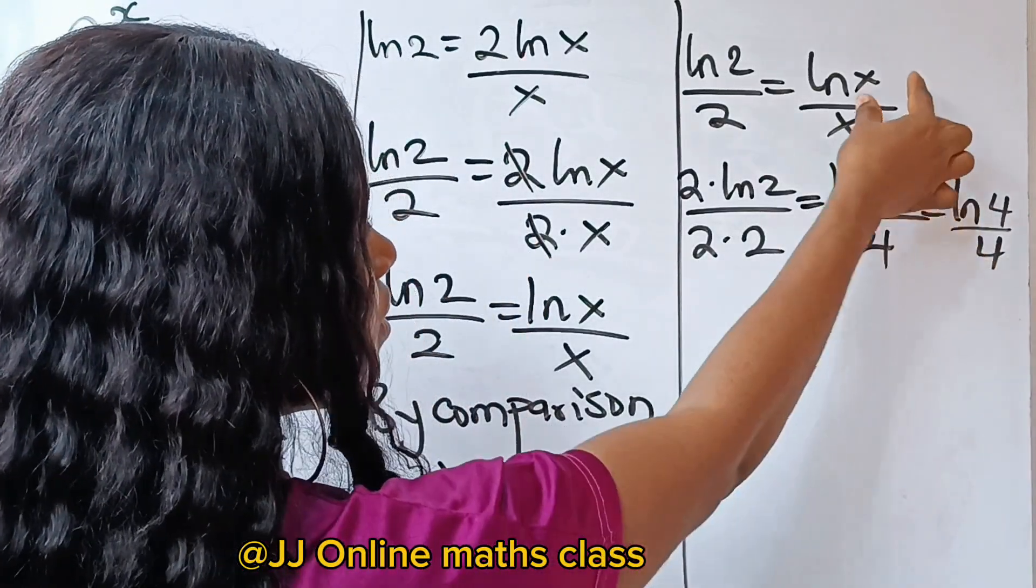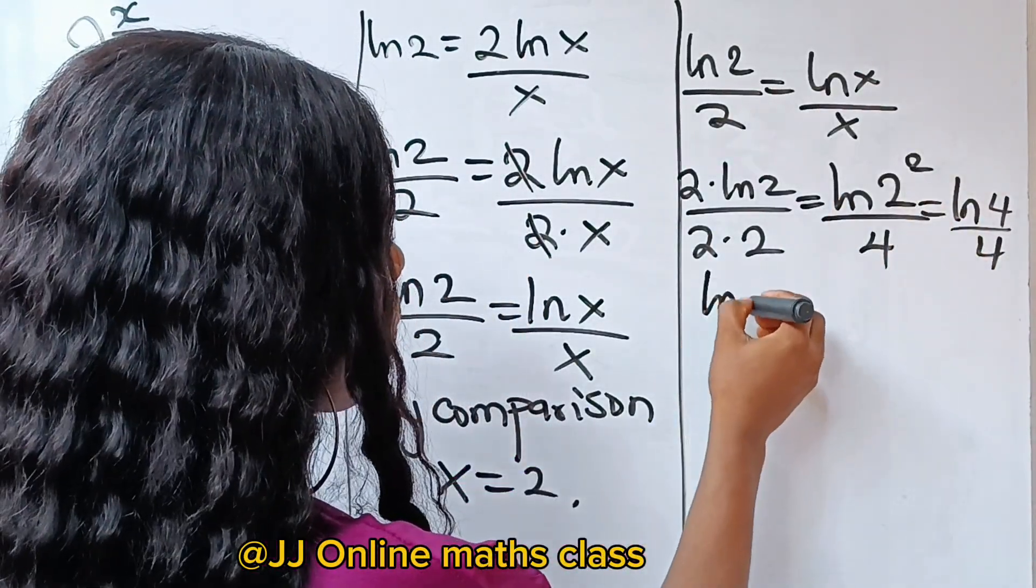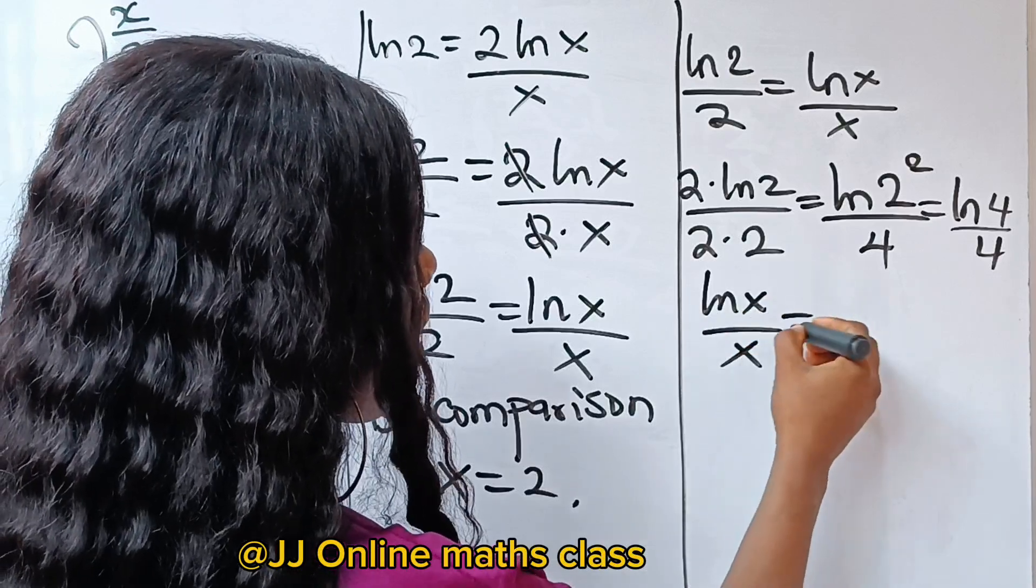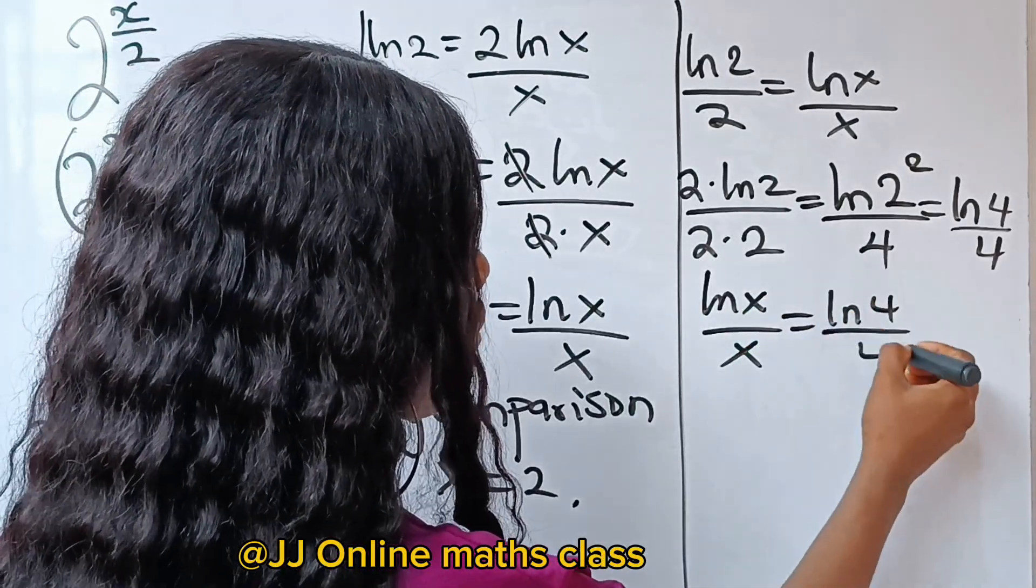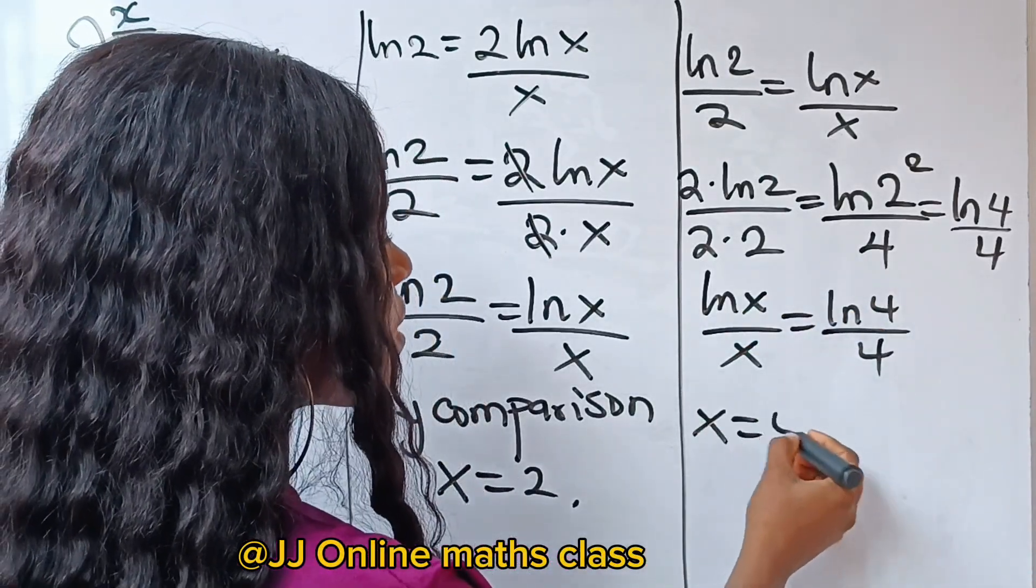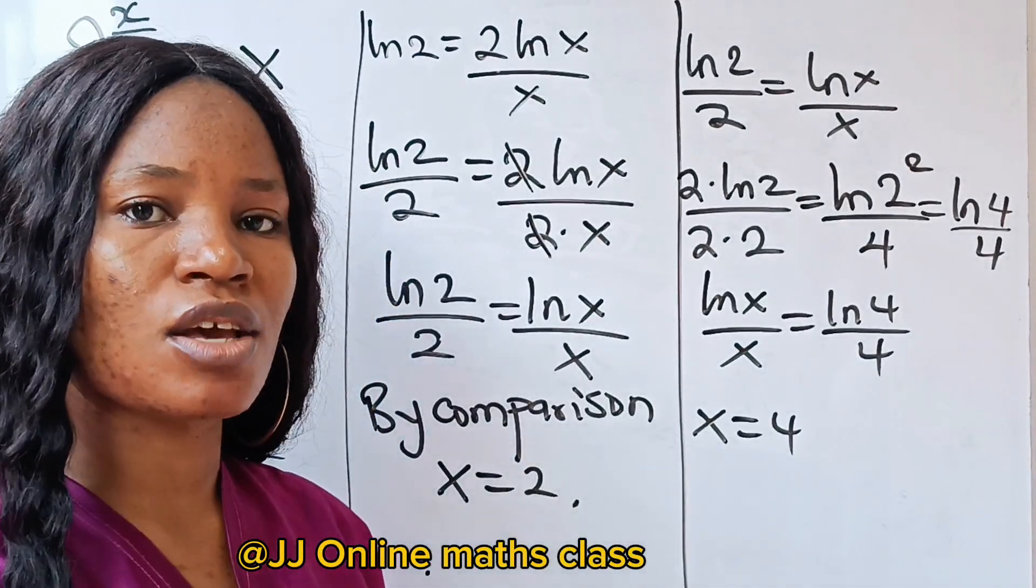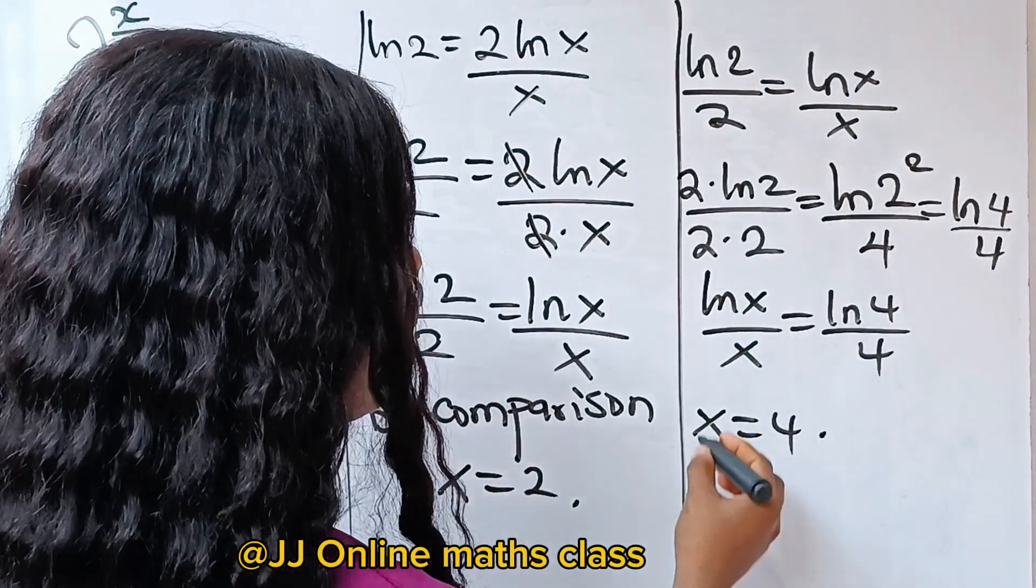So this can also satisfy this particular equation that we establish that ln x over x is ln 4 over 4. Therefore, we can still say that our x is equal to 4.